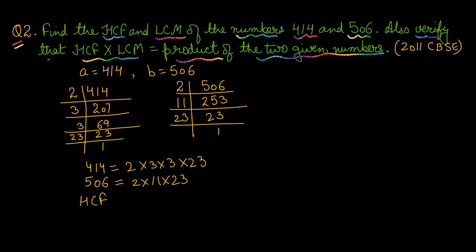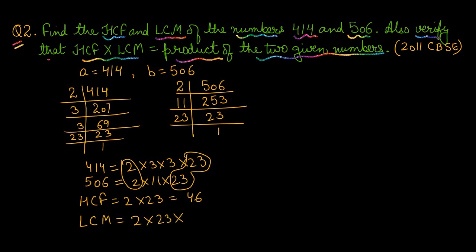The HCF is the highest common factor. The common factors in both numbers are 2 and 23, so HCF = 2 × 23 = 46. The LCM is the least common multiple — it includes the HCF plus the non-common prime factors: 3 × 3 from the first number and 11 from the second. Multiplying all these factors gives LCM = 4554.